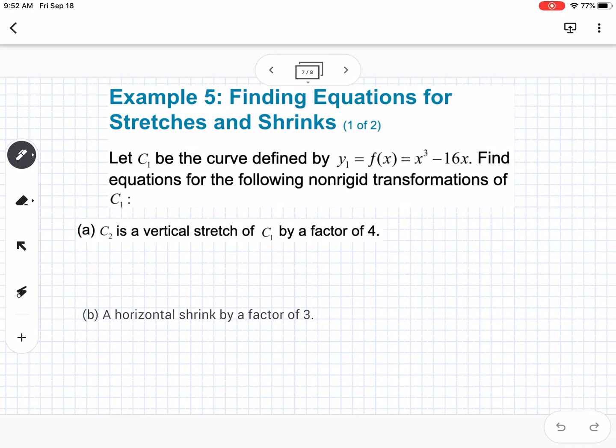Okay. So example five is finding equations for stretches and shrinks. So it says, let c1 be the curve defined by y1 equals f of x equals x cubed minus 16x. Find the equations for the following non-rigid transformations of c1. So it says a vertical shrink of c1 by a factor of 4. So this is going to be, okay, this means that if it's a vertical stretch, that means the number is going to be outside. So that's saying that we had, so let's, I don't know, I'll call this g of x. So this is going to be 4 times x cubed minus 16x. So that means that we're going to have, if I distribute this, 4x cubed minus 64x. So that would be a vertical stretch, so notice how that 4 is on the outside.